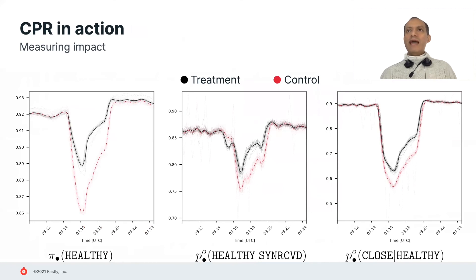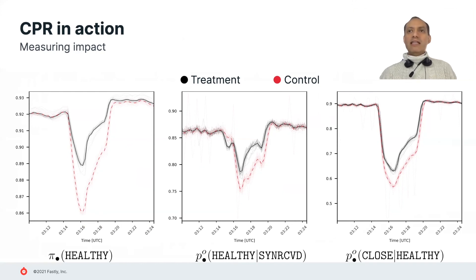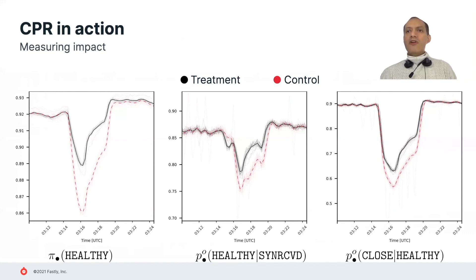So how does CPR look in action? To measure the effectiveness of CPR, we use an experimental approach. We randomly label some connections as part of a treatment group and the remainder as a control group for which path reselection is disabled. On the first graph, we see that treatment connections experience a higher probability of being healthy. On the second graph, treatment connections also have better chances of establishing, evidencing connection setup distress for control connections. On the third graph, treatment connections exhibit a greater chance of closing while healthy rather than when stalled, meaning that if connections do stall, treatment connections have better chances of recovery. These results show that CPR helps a small but significant proportion of connections, both established and pre-established. CPR helps resolve around 120 impairments like this every day, each with a median duration of about eight minutes.